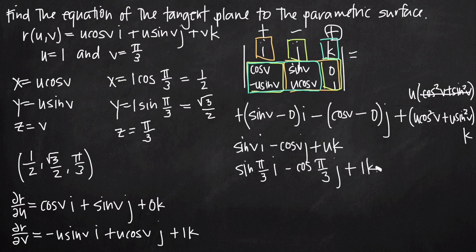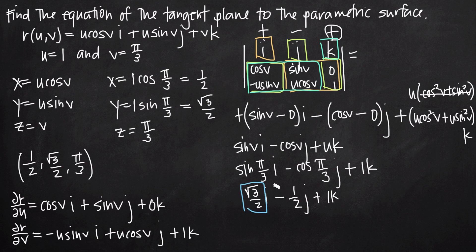Evaluating the cross product at u equals one and v equals pi over three: sine(π/3) is √3/2, so we get (√3/2) i. Cosine(π/3) is 1/2, so we get minus (1/2) j. And u equals one, so we get plus 1 k. These three coefficients — √3/2, −1/2, and 1 — are the normal vector components for the tangent plane.